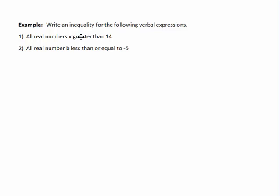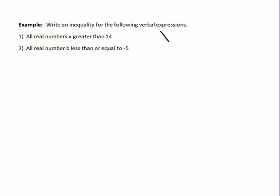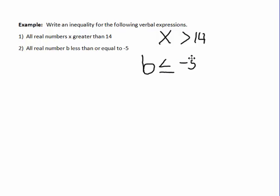Let's put these in practice. We're going to write an inequality for the following verbal expressions. First: all real numbers x greater than 14 — so we write x is greater than 14. Next: all real numbers b less than or equal to negative 5 — so b is less than or equal to negative 5.